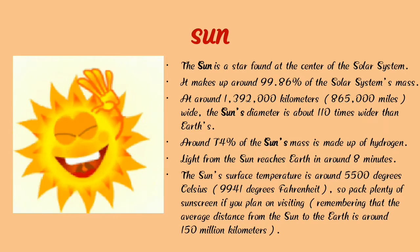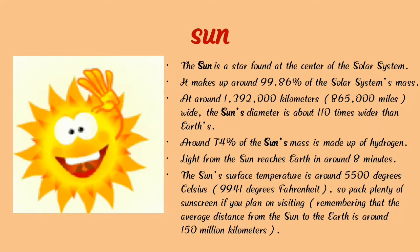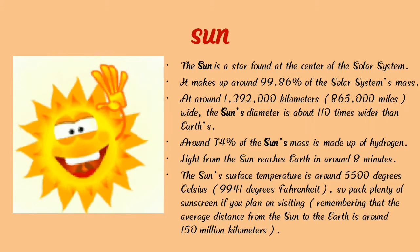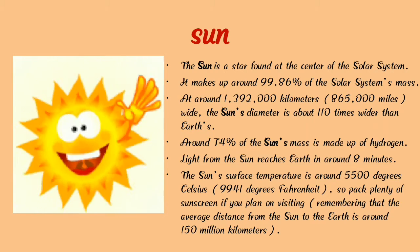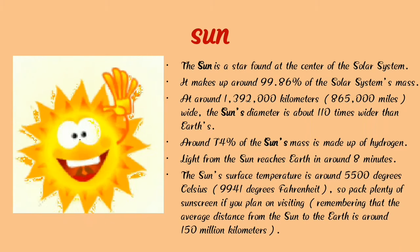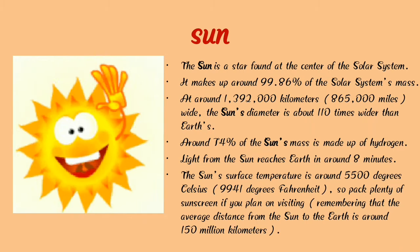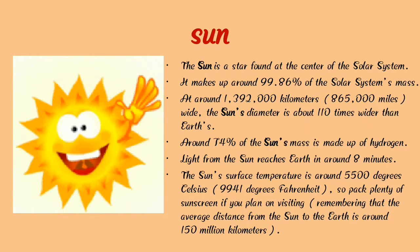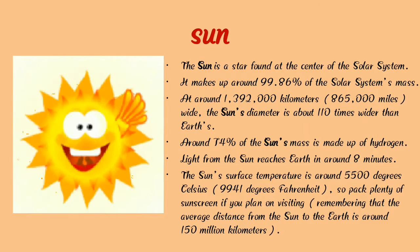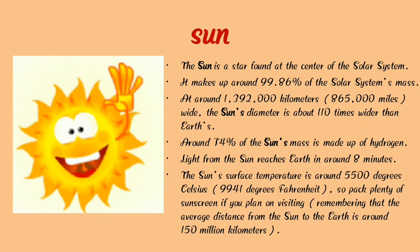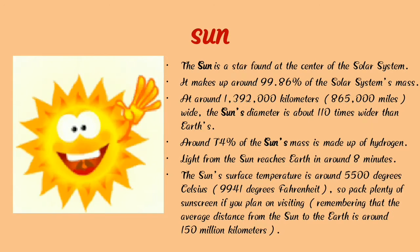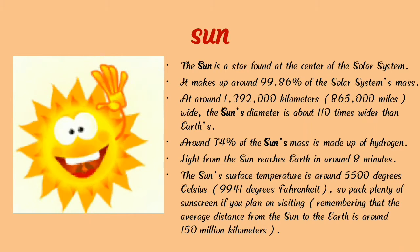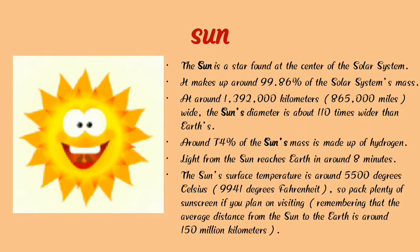At around 1,390,000 kilometers wide, the Sun's diameter is about 110 times wider than Earth. Around 74% of the Sun's mass is made of hydrogen. The light from the Sun reaches Earth in around 8 minutes. The Sun's surface temperature is around 5,500 degrees Celsius — so pack plenty of sunscreen if you planned on visiting. The average distance from the Sun to the Earth is around 150 million kilometers.